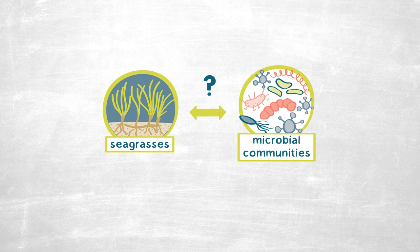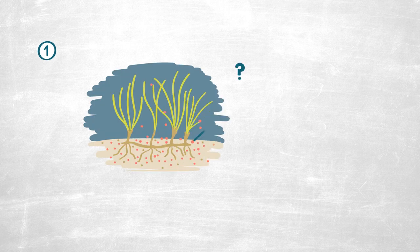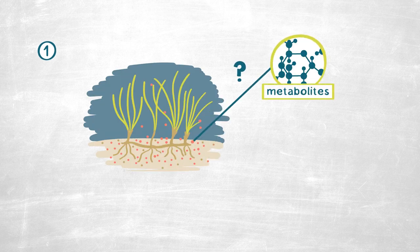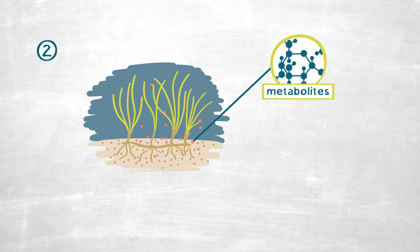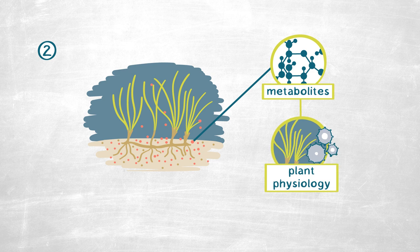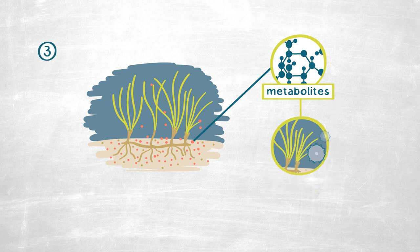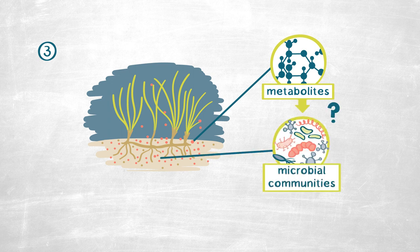For this research study I was really interested in answering three specific research questions. First, what types of metabolites or small compounds are seagrasses excreting into their soils or sediments? Second, can we link these metabolites or the presence of these compounds to the actual plant physiology? And third, what is the impact on the sediment microbial communities?